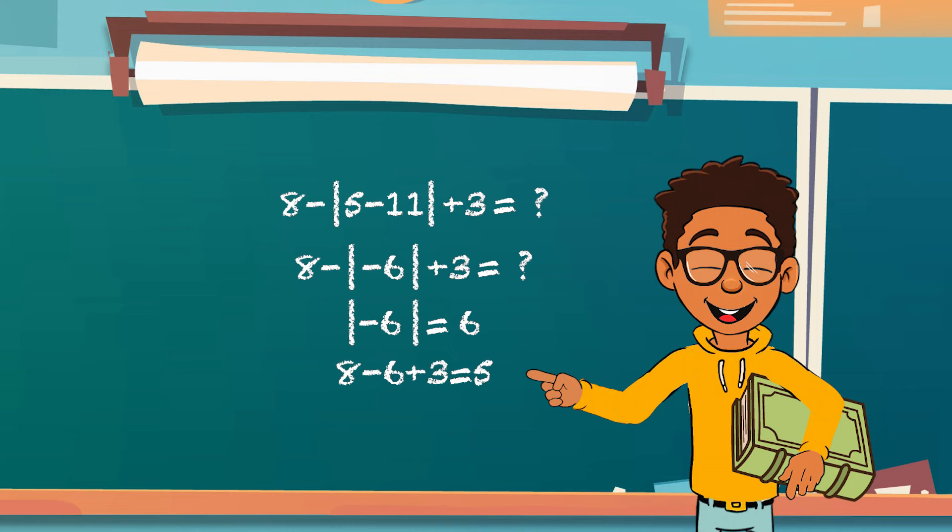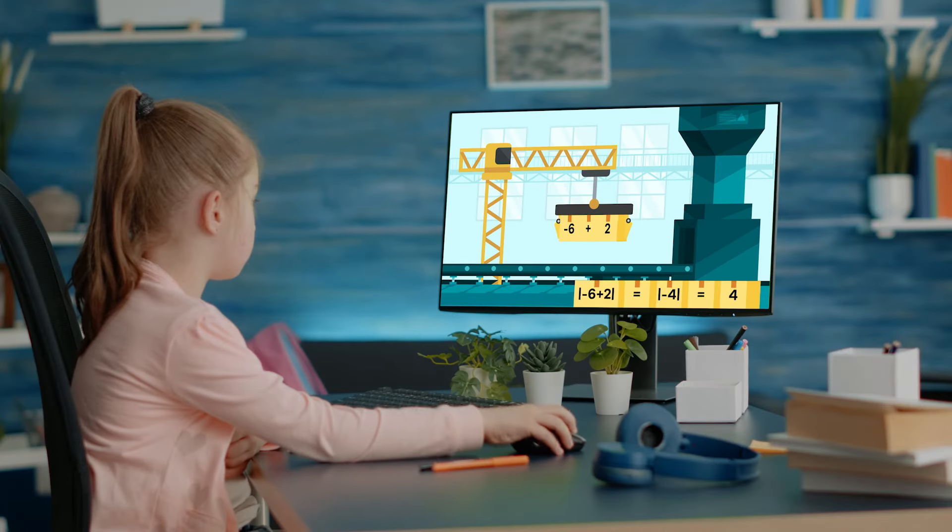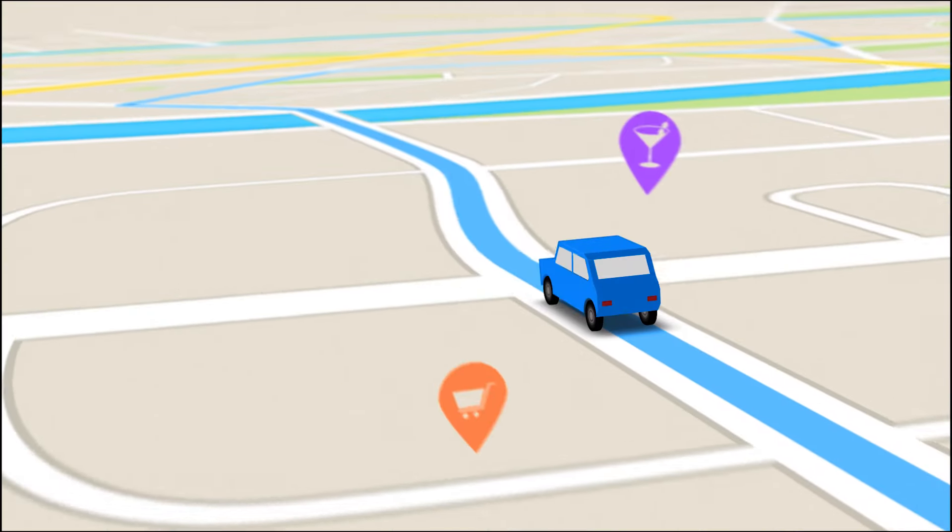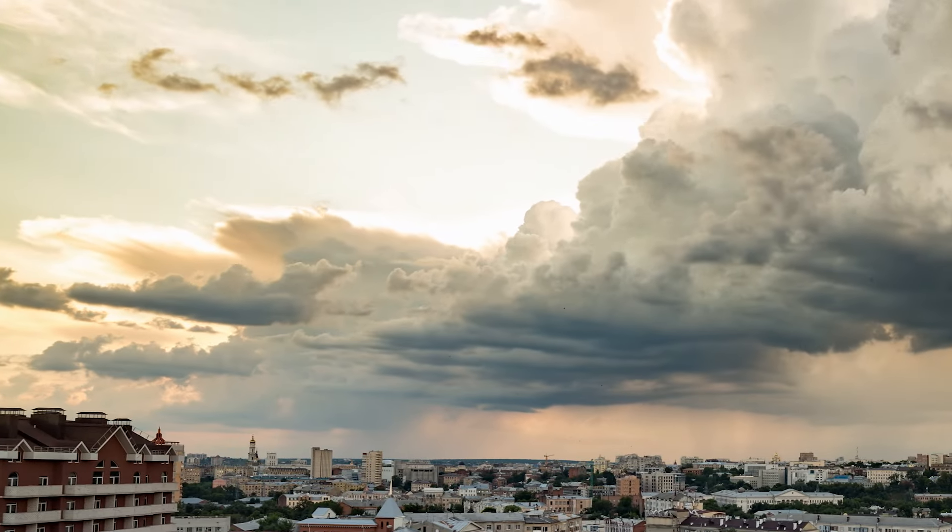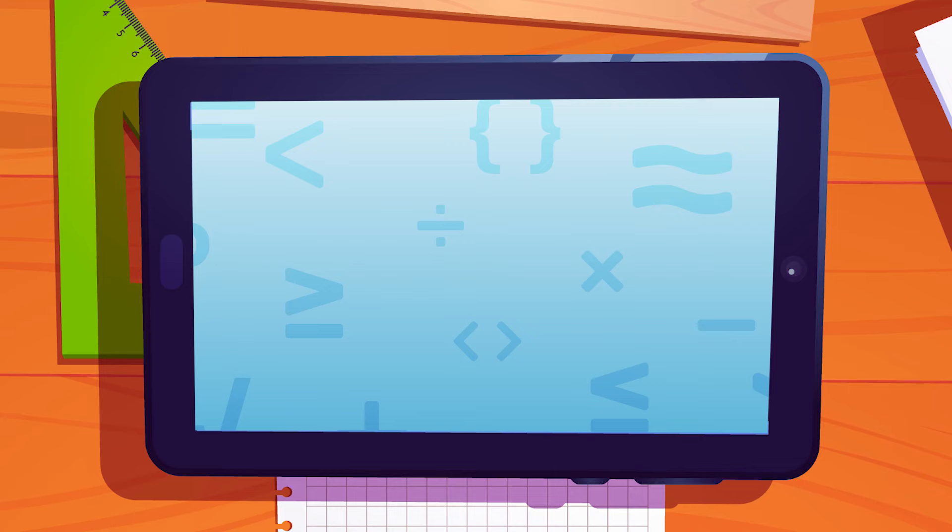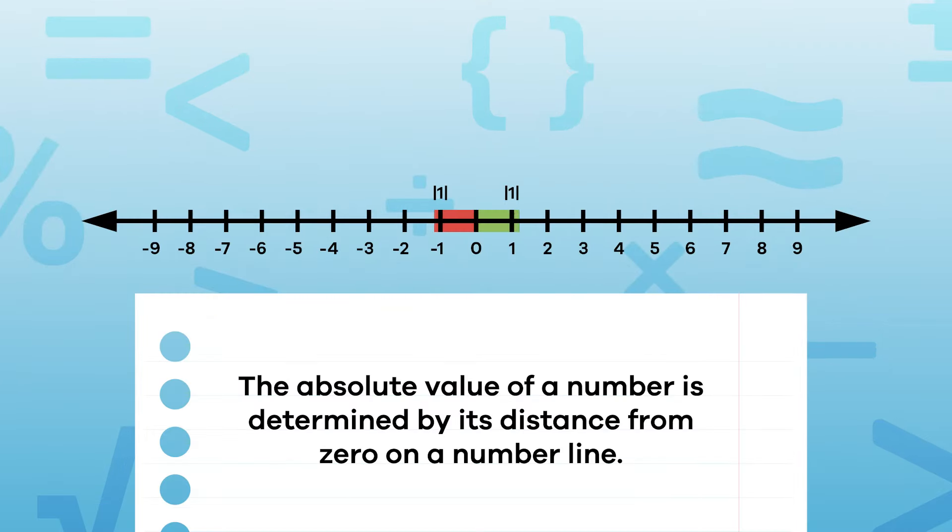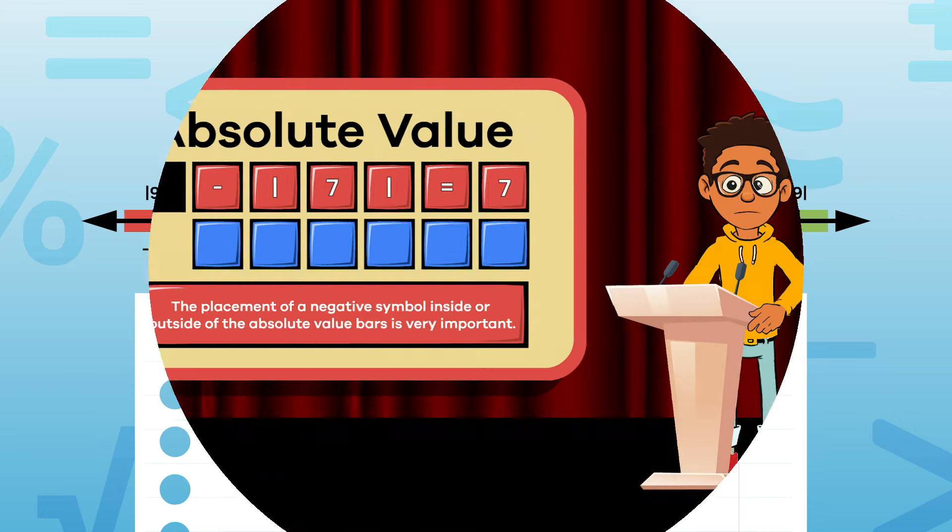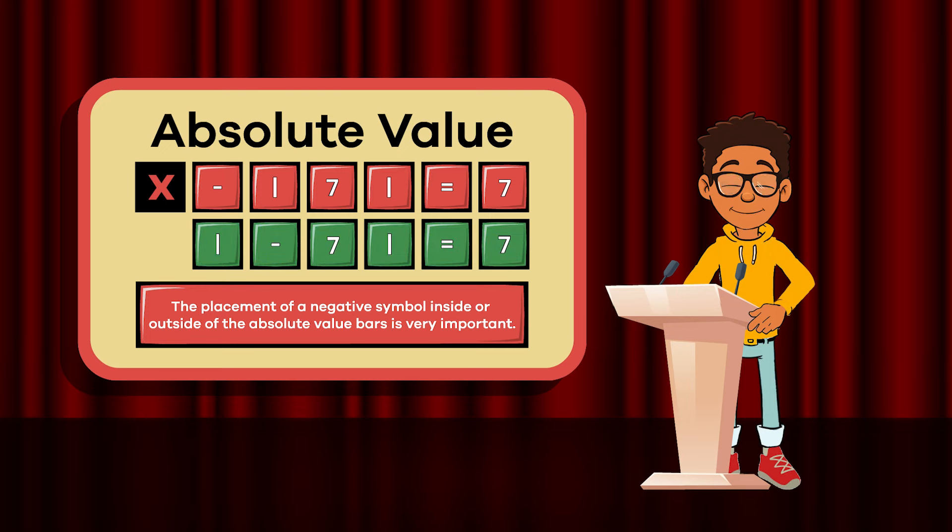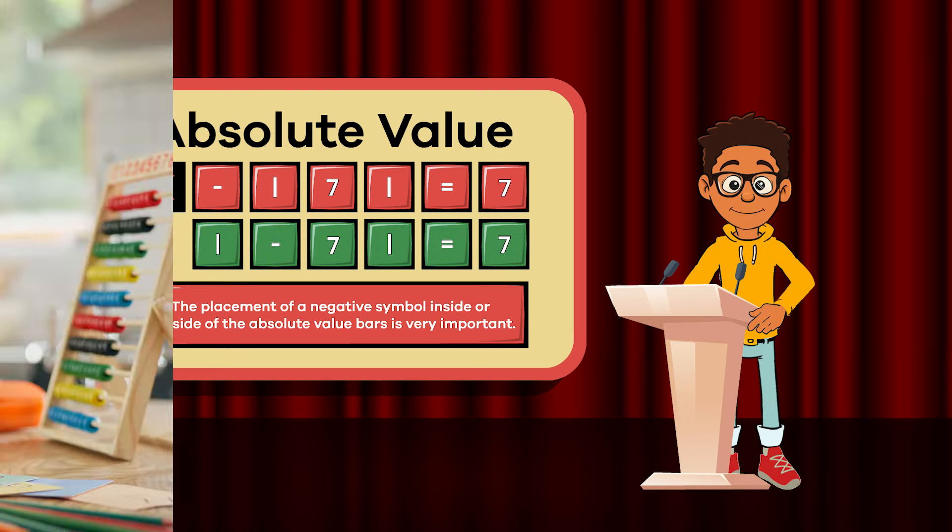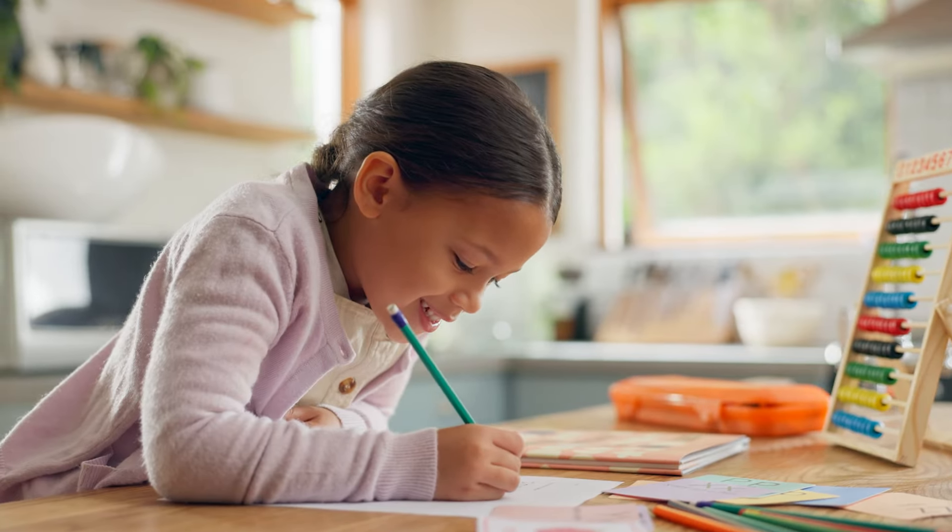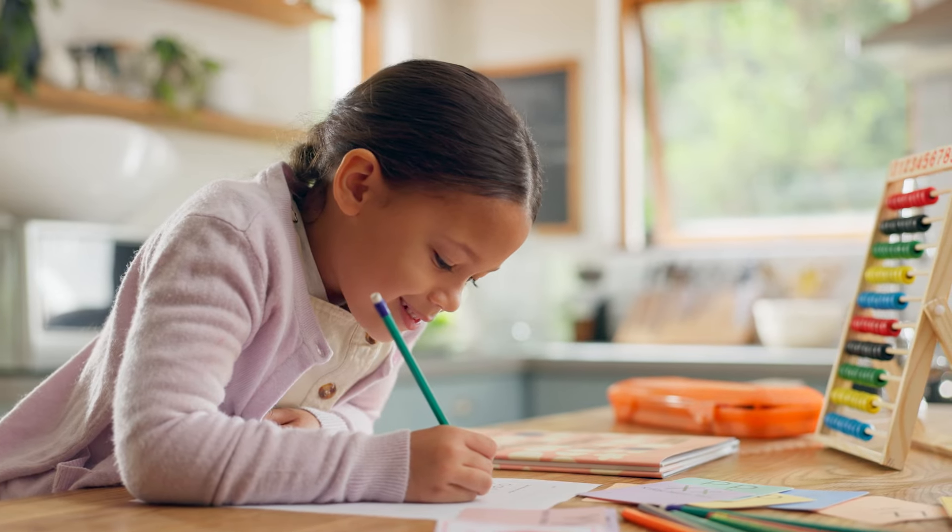Nice work everyone! Absolute value is pretty cool, because you can use it to figure out useful things like distance and weather. Remember that every number besides 0 has an absolute value. You determine it by measuring a number's distance from 0, and that the position of a negative symbol is super important. Now, go have fun and create some amazing equations!